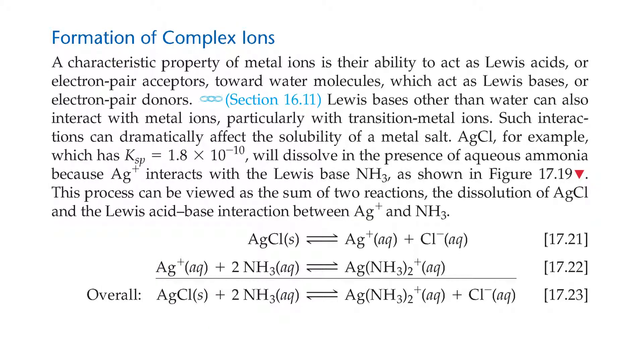Formation of complex ions. A characteristic property of metal ions is their ability to act as Lewis acids, or electron-pair acceptors, towards water molecules, which act as Lewis bases, or electron-pair donors. Lewis bases, other than water, can also interact with metal ions, particularly the transition metal ions. Such interactions can dramatically affect the solubility of a metal salt. Silver chloride, for example, which has a Ksp of 1.8 × 10⁻¹⁰, will dissolve in the presence of aqueous ammonia, because silver ion interacts with the Lewis base ammonia, as shown in Figure 17-19.